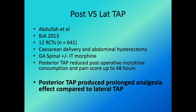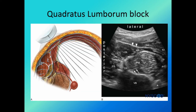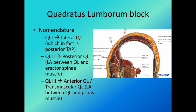The quadratus lumborum block nomenclature uses QL1, QL2, and QL3. QL1 is the lateral QL, which is essentially a form of posterior TAP block with LA placed lateral to the QL muscle. QL2 places LA between the quadratus lumborum muscle and the erector spinae muscle. QL3 deposits LA between the quadratus lumborum muscle and the psoas muscle.